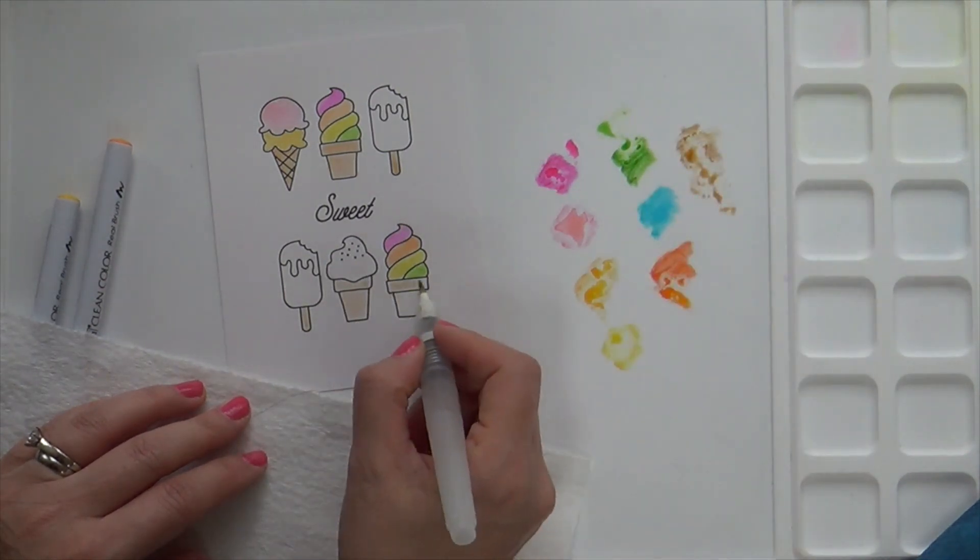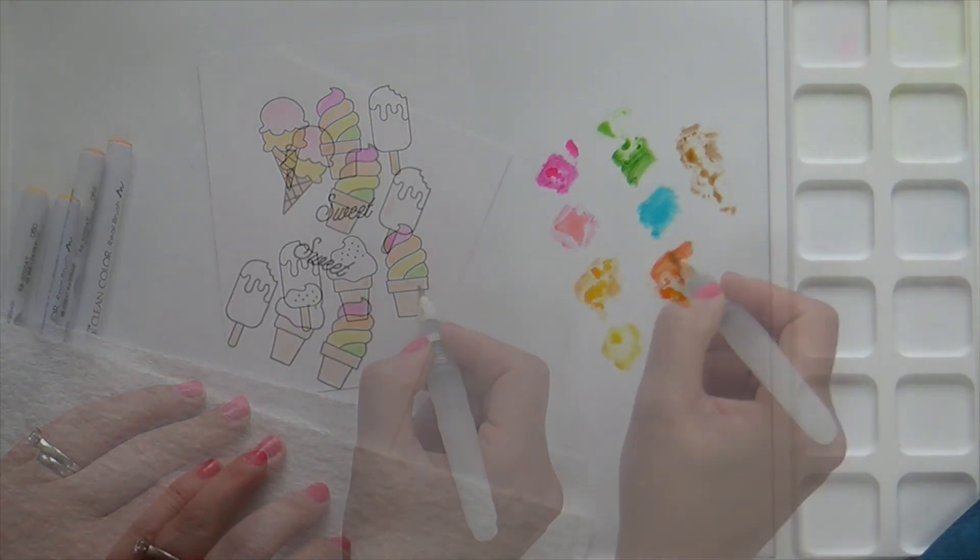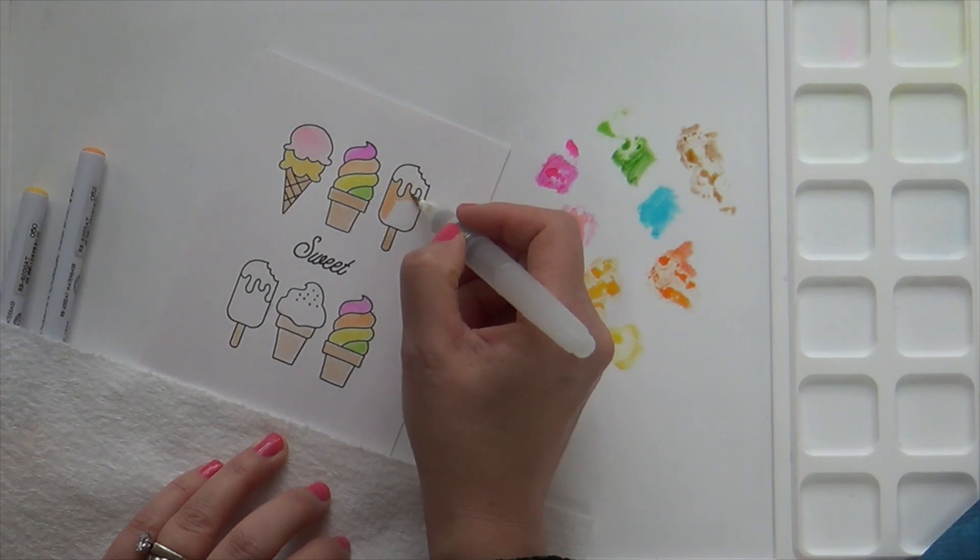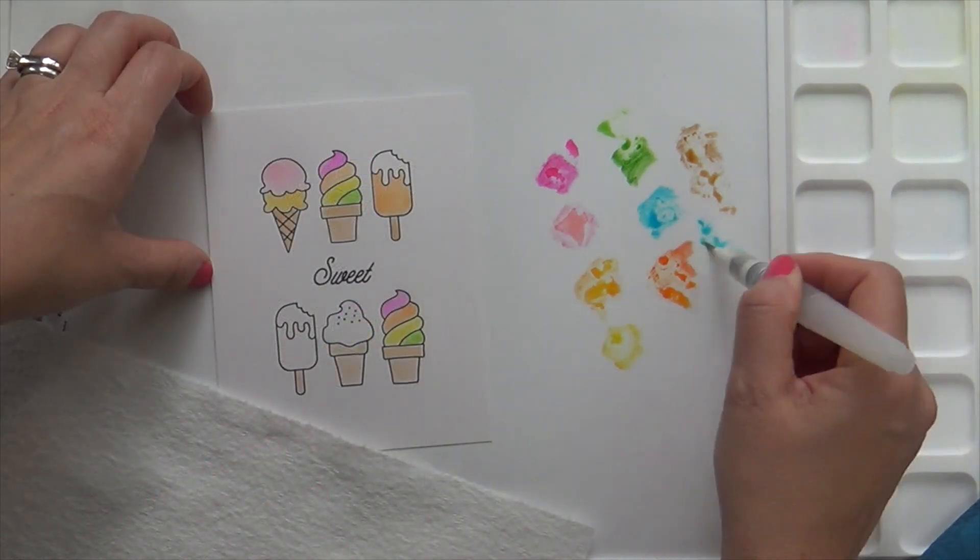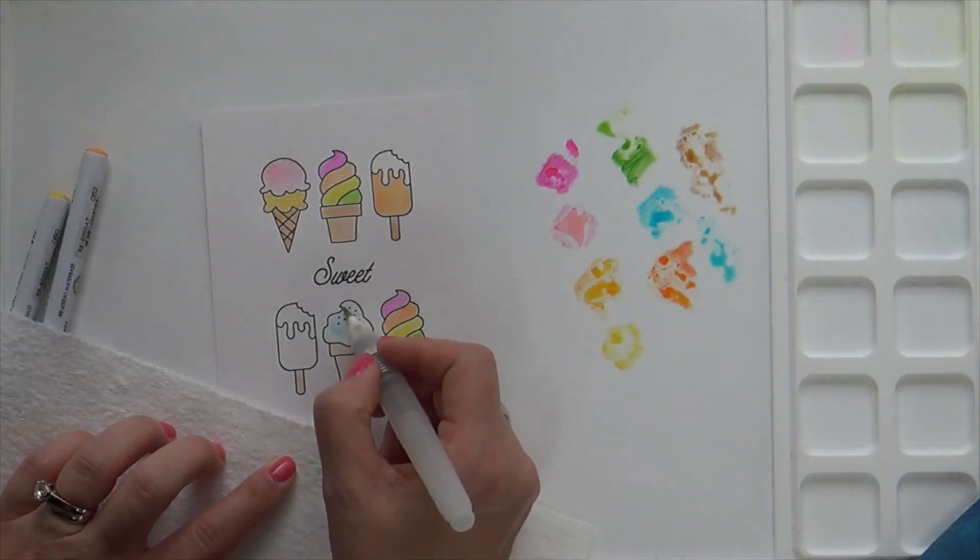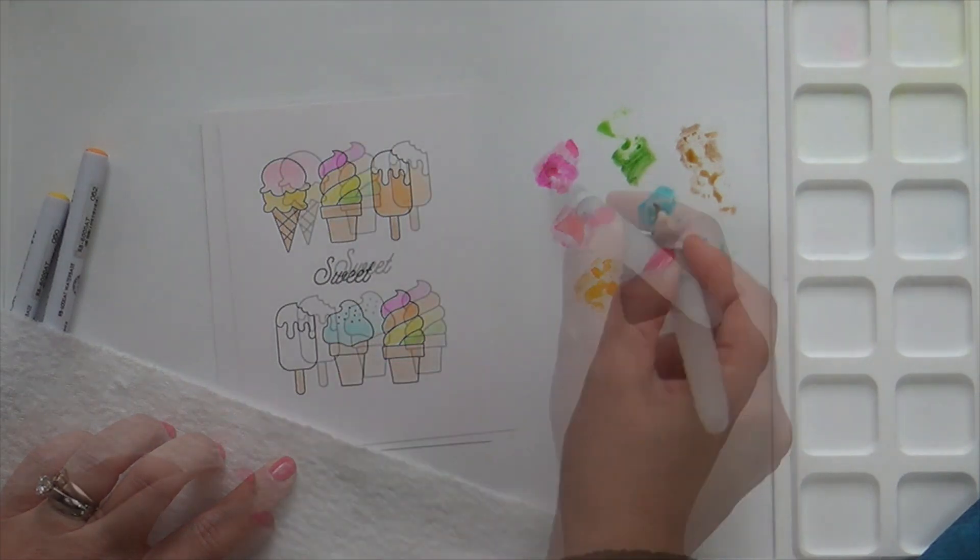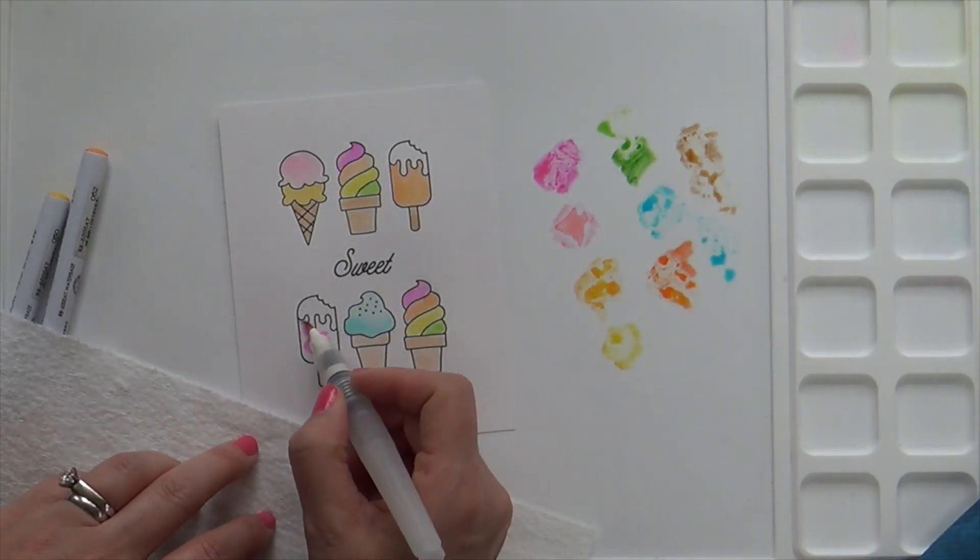Okay, so that would be a creamsicle I just painted, which is my family's favorite—an orange creamsicle. Not my fave. I'm a chocoholic. I go chocolate peanut butter every time, and it does me just fine.